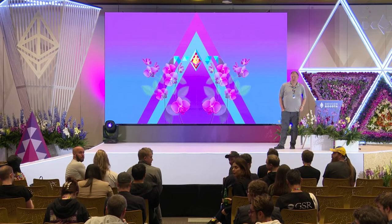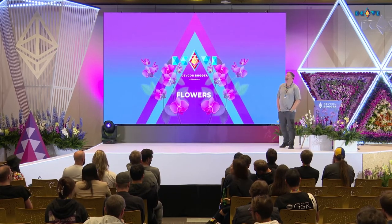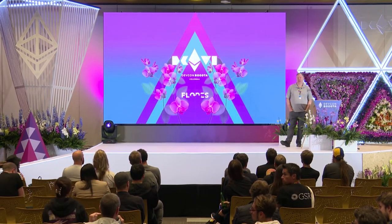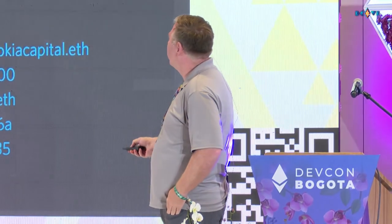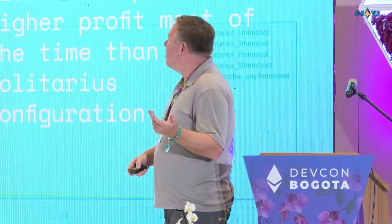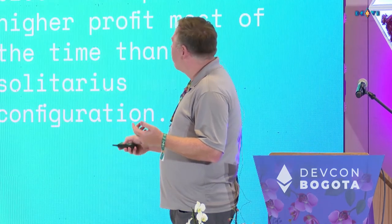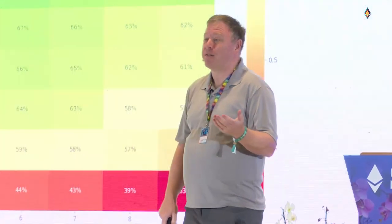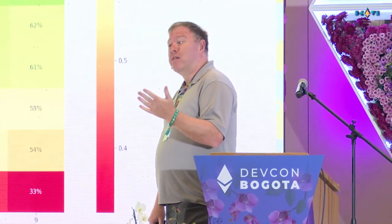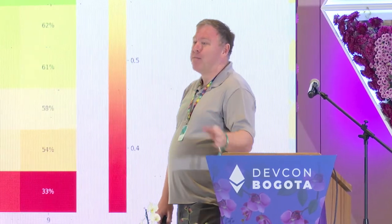Question: What's the right number of validators to have in a smoothing pool? At what point does the probability of rewards begin to approximate your 3,000-validator model — would you get the same effect at 30 or 300? Answer: Even at about 100 mini-pools you start to get it. Even at 3,000 you're at 78–80%, which is pretty close. It doesn't take that much to start getting those rewards. Obviously, the more you have in the pool, the less variance you get and the more predictable the income stream becomes.